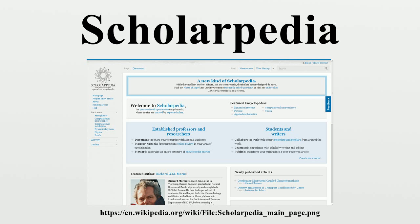In addition to the earlier system in which the author gives a non-exclusive license directly to Scholarpedia, Scholarpedia uses the same wiki engine as Wikipedia, MediaWiki, with modifications to support voting on revisions. The software's development is done privately.